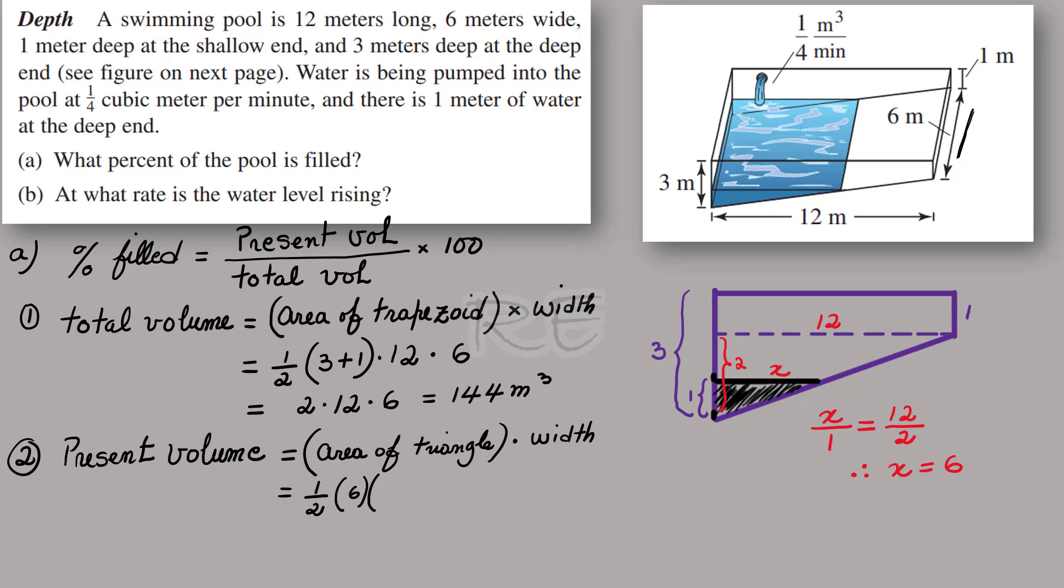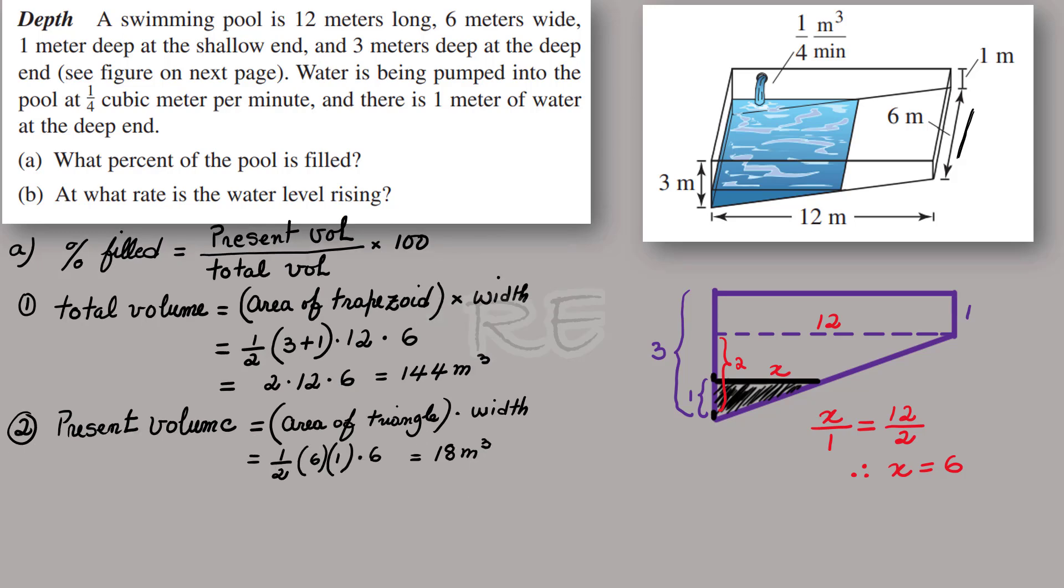So the area of the triangle is half of 6, the base, times the height, 1, multiplied by the width, which is 6. So the present volume is 18 cubic meters.